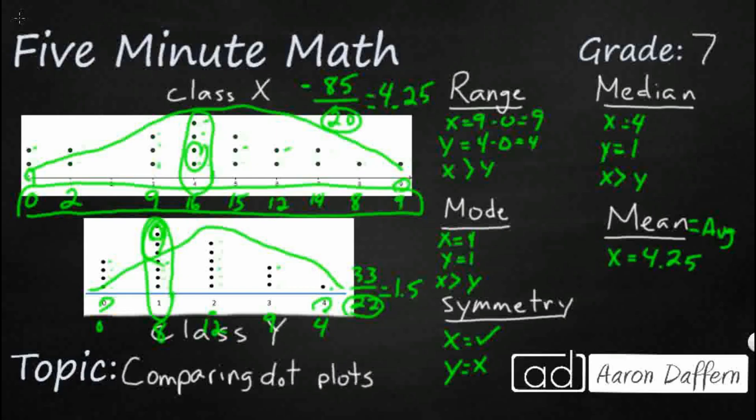If I do that same thing for Y, total is 33 out of 22 total values. That's going to be 1.5. So if we wanted to compare them, we would say the mean of X, which is 4.25 is greater than the mean or the average of Y, 1.5.